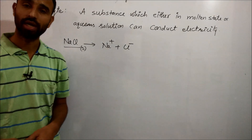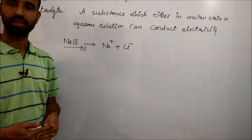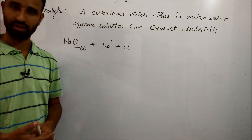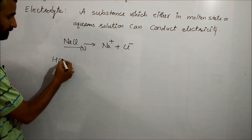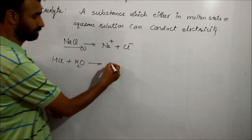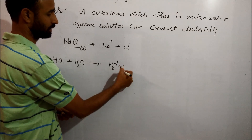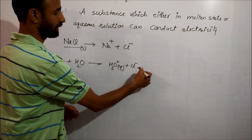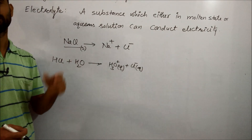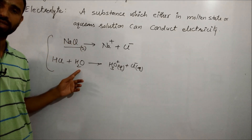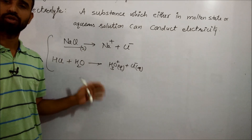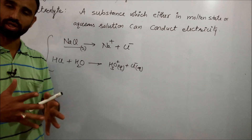A strong electrolyte is one which dissociates or ionizes completely into its ions. For example, HCl when dissolved in water gives H₃O⁺ and Cl⁻, so HCl is also a strong electrolyte. In the case of strong electrolytes, ionization is represented by a single arrow.